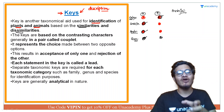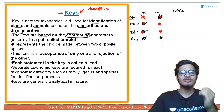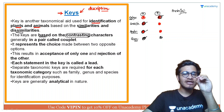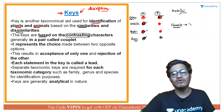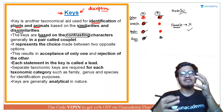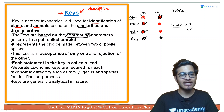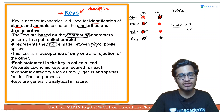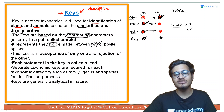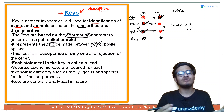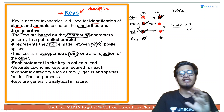एक option सही होगा, एक option गलत होगा. So keys contrasting characters पर based होती हैं — contrasting का मतलब just opposite, जैसे गोरे का opposite काला, छोटे का opposite लंबा. यहाँ पर androsium absent या present — जैसे female plant में male sex organs नहीं होंगे, so androsium absent और gynosium present होगा. इस तरह contrasting characters की list बनाएंगे और traits को mark करते हुए चलेंगे. It represents the choice made between two opposite options — एक accept हो जाता है, दूसरा automatically reject हो जाता है.